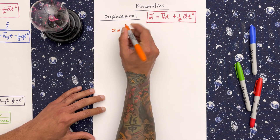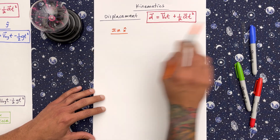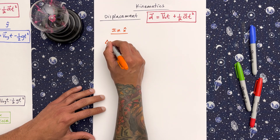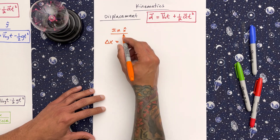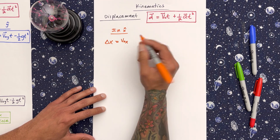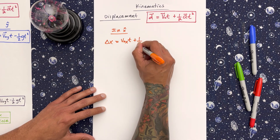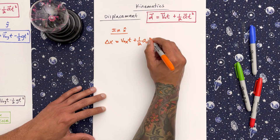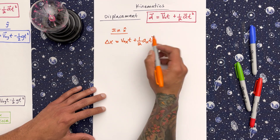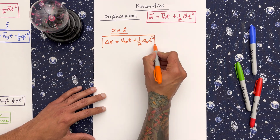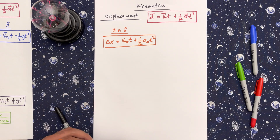In the x-direction, I'm going to rewrite this in terms of x. The change in x equals velocity initial in the x direction times time, plus one-half acceleration in the x direction times time squared. I'll box this up — this is the displacement in the x direction.